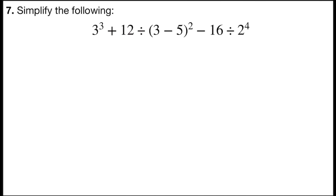Problem number 7 says simplify the following: 3 cubed plus 12 divided by 3 minus 5 squared minus 16 divided by 2 to the 4th power.